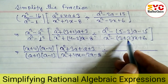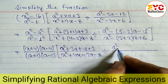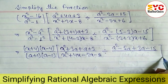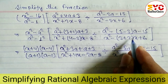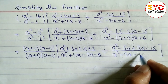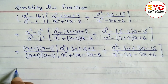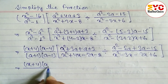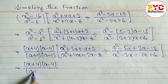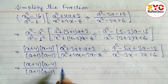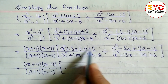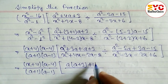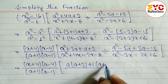We open the bracket: x squared plus 4x minus 2x minus 8. After the division sign, we open the next bracket: a squared minus 5a plus 3a minus 15, divided by x squared minus 3x plus 2x plus 6. Now we write x plus 4 times x minus 4, divided by a plus 1 times a minus 1. Next, we take common factors from the first two terms and last two terms.